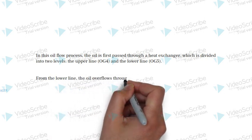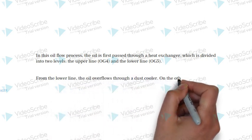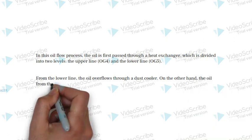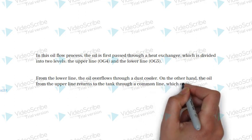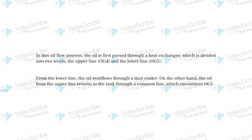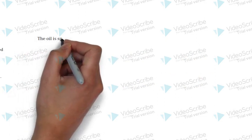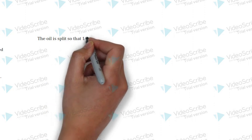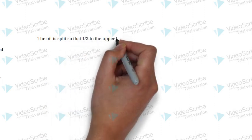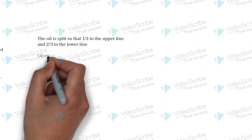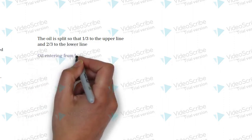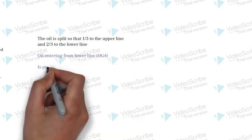In this oil flow process, we have a system that involves a heat exchanger divided into two levels: the upper line AUG-4 and the lower line AUG-5. The oil is initially split, with one-third of the oil flowing into the upper line and two-thirds of the oil flowing into the lower line. This division ensures proper distribution for lubrication purposes.